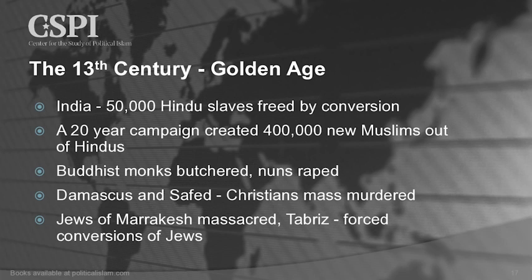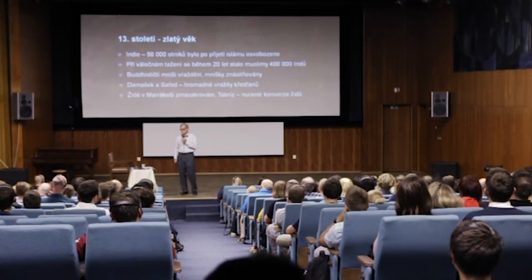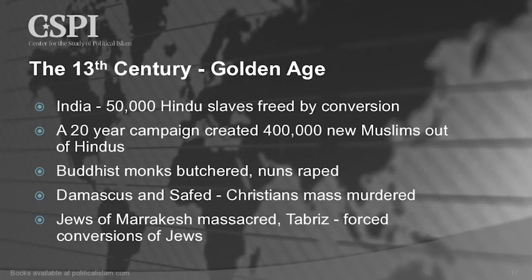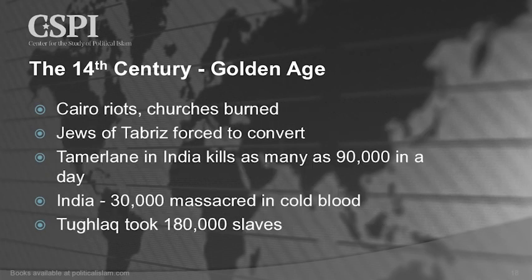Buddhist monks are butchered, nuns are raped, and then an intellectual tragedy: the library at Nalanda — at that time the largest library in the world, a Buddhist library — took days to burn. In Damascus and Safi there is mass murder of Christians. The Jews of Marrakesh are massacred. In Tabriz, there is forced conversion of Jews. And we're still in the Golden Age, by the way. This is golden.